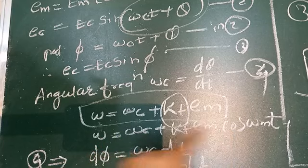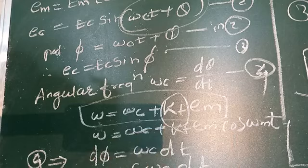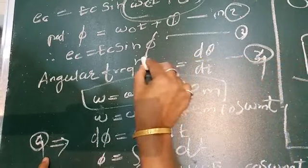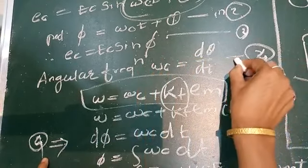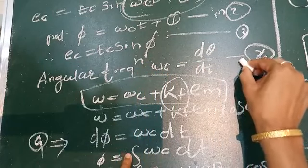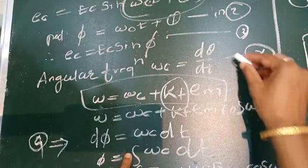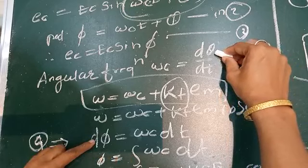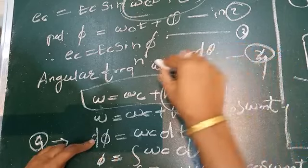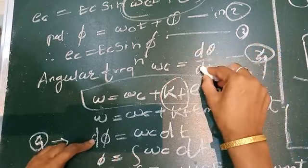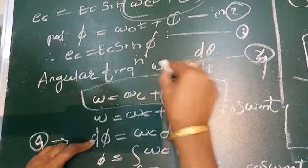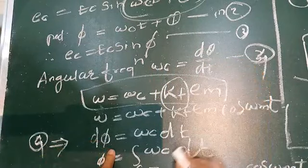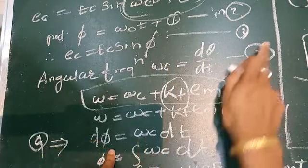Equation 4 implies: dφ = ω · dt. Substituting, dφ = (ωc + kf · Em cos(ωm t)) dt. To find φ, we integrate both sides with respect to t.